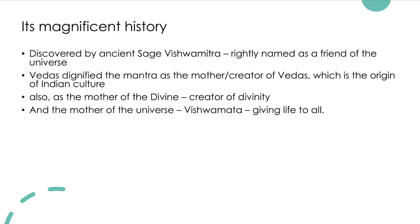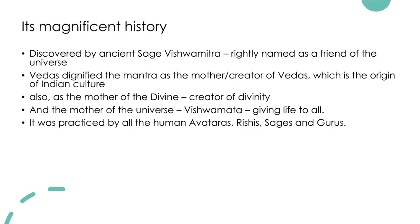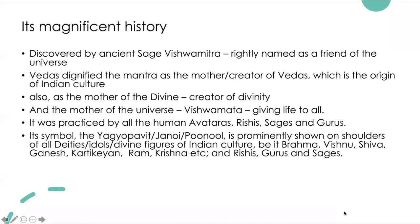It was practiced by all human avataras, rishis, sages, and gurus. Its symbol — yagya pavit, janoy, or punul — is prominently shown on the shoulders of all deity idols and divine figures of Indian culture, be it Brahma, Vishnu, Shiva, Ganesh, Kartikeyan, Rama, Krishna, etc., as well as on the shoulders of rishis, gurus, and sages.